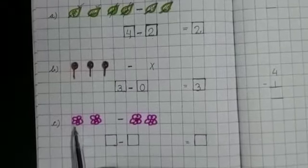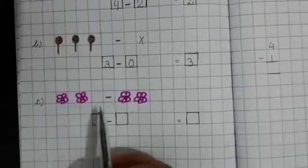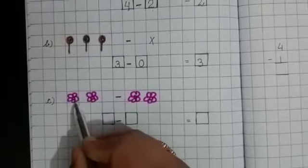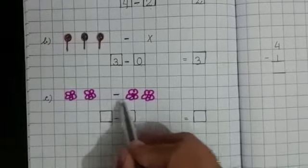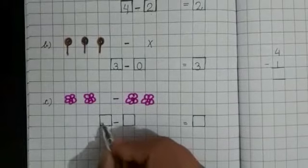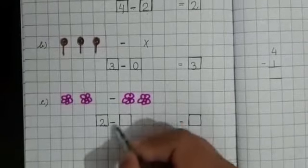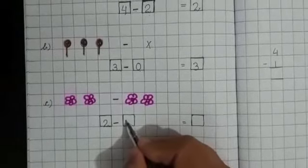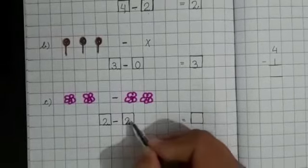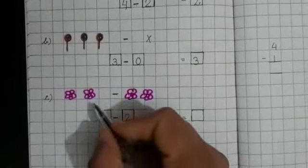Now in the third problem I have taken flowers. Yes. On the left side of this minus sign, 1, 2 flowers are there. And on the right side 1, 2. So in the very first box you will write 2. And after this minus sign again you will write 2.